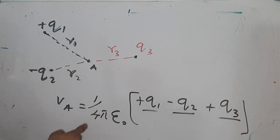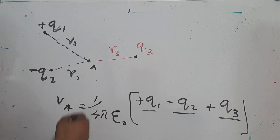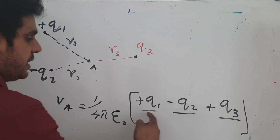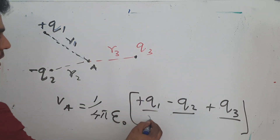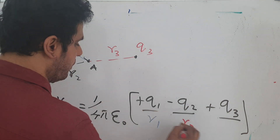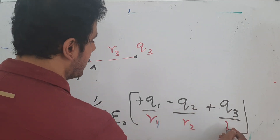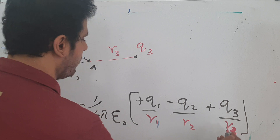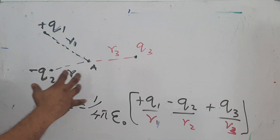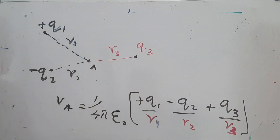This is the method to write the resultant electric potential at point A. You take 1/(4πε₀) in front of the bracket, then write the charges with their polarities, each divided by its respective distance: q1/r1, q2/r2, and q3/r3. This is the method to find the resultant electric potential at a point.